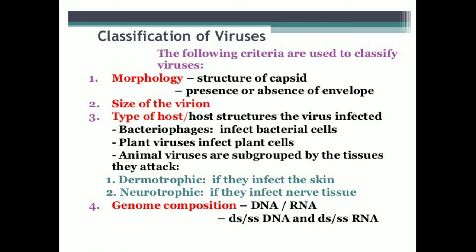In short, virus classification is based on: morphology; size of the virus particle or virion; the type of host the virus attacks — bacteria, plants, or animals; and genome composition, that is, presence of RNA or DNA, and whether it is single-stranded or double-stranded. This is the brief information about the classification of viruses.